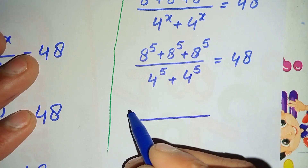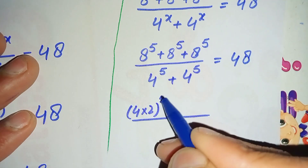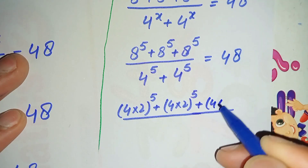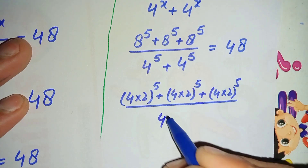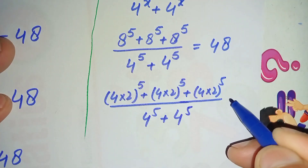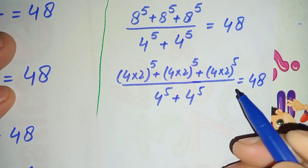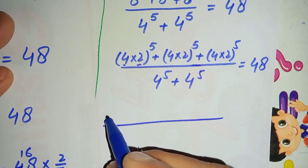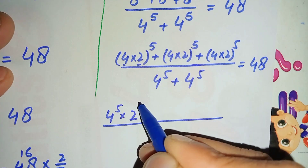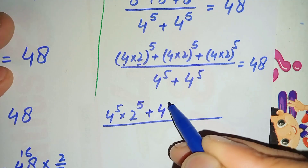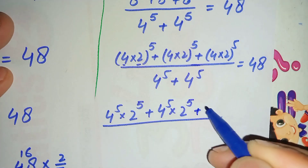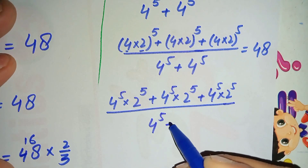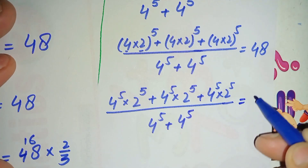We rewrite 8 as 4 times 2, so each 8^5 term in the numerator becomes (4×2) raised to power 5. Spreading the power over the two bases, each term becomes 4 raised to power 5 times 2 raised to power 5. So the numerator becomes 4^5 × 2^5 plus 4^5 × 2^5 plus 4^5 × 2^5, divided by 4^5 plus 4^5, equal to 48.